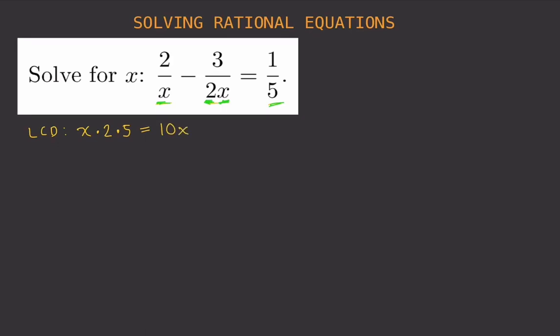Now what do we do with the LCD? The purpose of finding the LCD is to multiply it to both sides of the equation, because that will eliminate the denominators. So we multiply 10x to both sides: 10x times (2/x minus 3/2x) equals (1/5) times 10x.